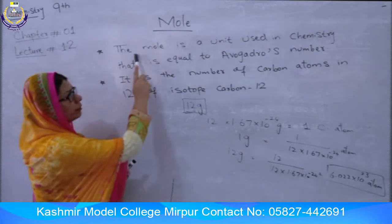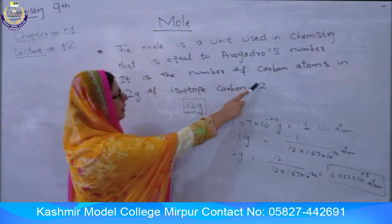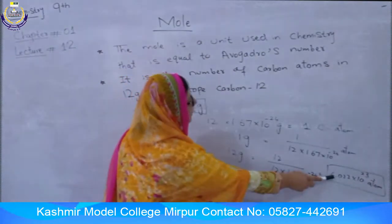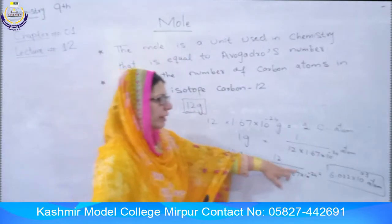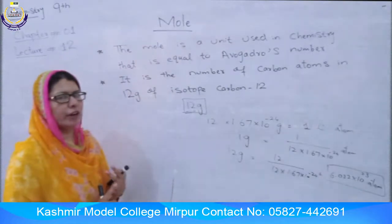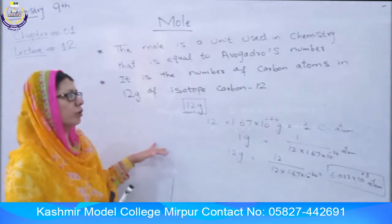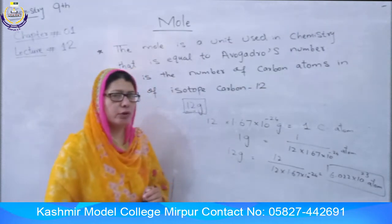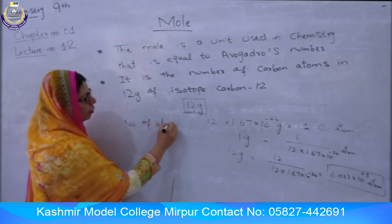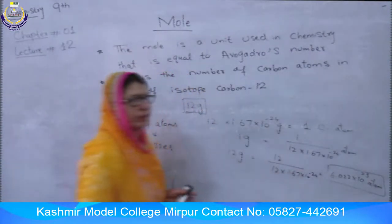So the mole is a unit used in chemistry equal to Avogadro's number, or the number of carbon atoms in 12 grams of isotope carbon-12. Carbon-12 contains 6.022 × 10²³ carbon atoms, which equals 1 mole. This is also the atomic mass, molecular mass, or formula mass expressed in grams. The mass is 12 grams and the number of atoms is 6.022 × 10²³.